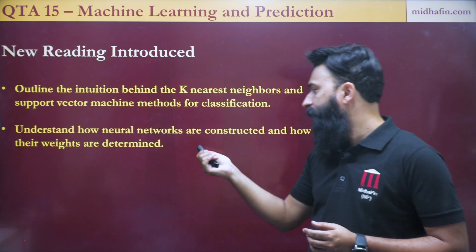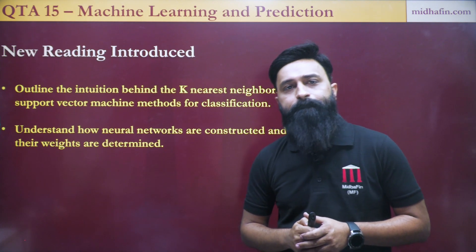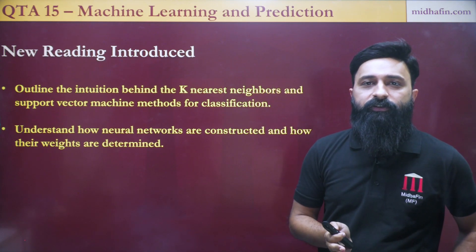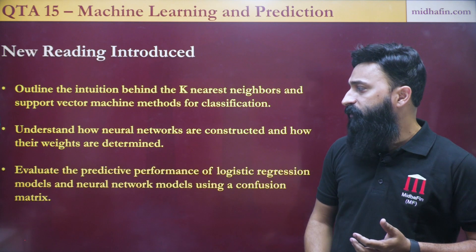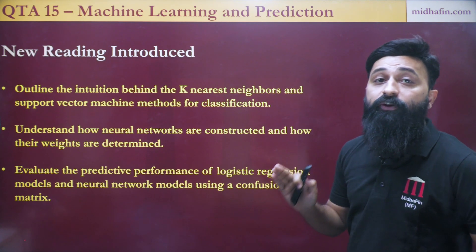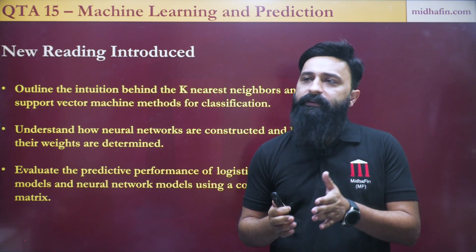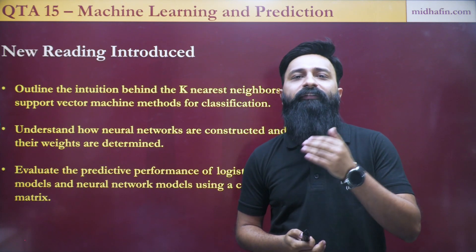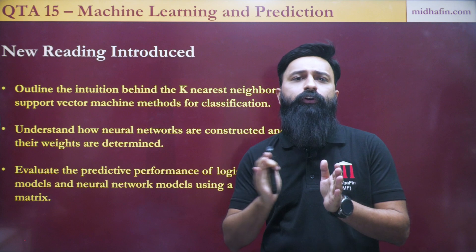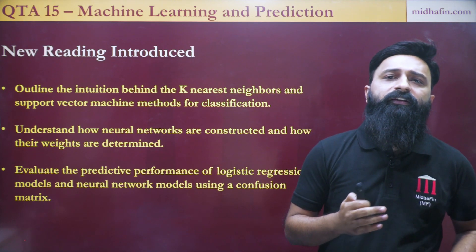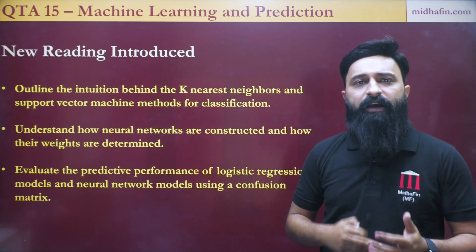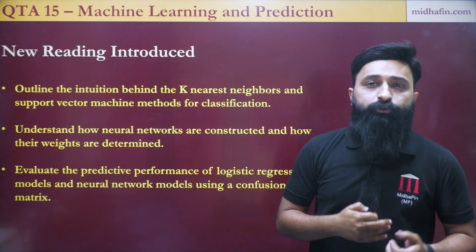The learning objectives also cover the intuition behind k-nearest neighbors and support vector machine (SVM) methods for classification. K-nearest neighbors is a simple technique that can be used for classification or predicting the value of a variable. SVMs are a class of models suited to classification problems when there are a very large number of features. Understanding how neural networks are constructed and how their weights are determined is also covered — artificial neural networks are loosely modeled on how the brain performs computation. Finally, evaluating the predictive performance of logistic regression and neural network models using a confusion matrix — a 2×2 matrix showing possible outcomes and whether the predicted answer was correct — is also included. This chapter is also less calculative and more conceptual and theoretical in nature.